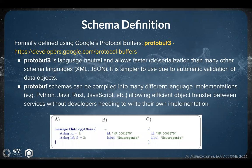You can learn more about Protobufs on the website listed here. It is language-neutral and allows faster deserialization than many other schema languages like XML or JSON. Because it goes on the wire as a binary representation, the format allows for faster transfer, and it is simpler to use due to automatic validation of data objects. Protobuf schemas can be compiled into many different language implementations — JavaScript, Python — allowing efficient object transfers between services without developers needing to write their own implementation.